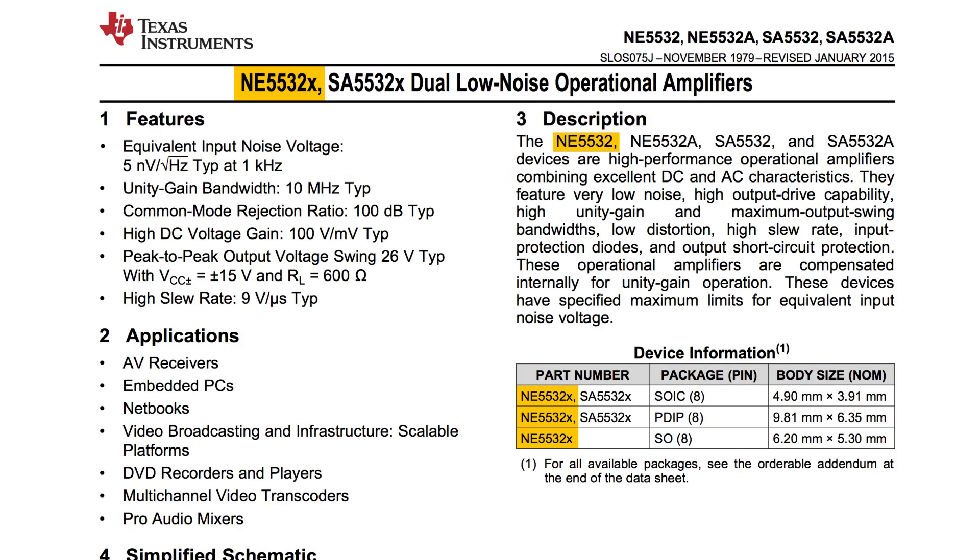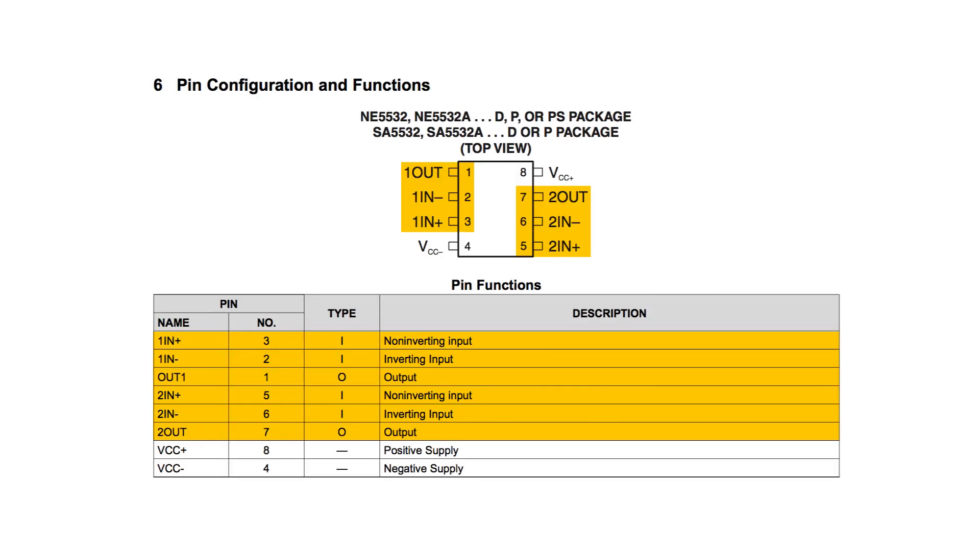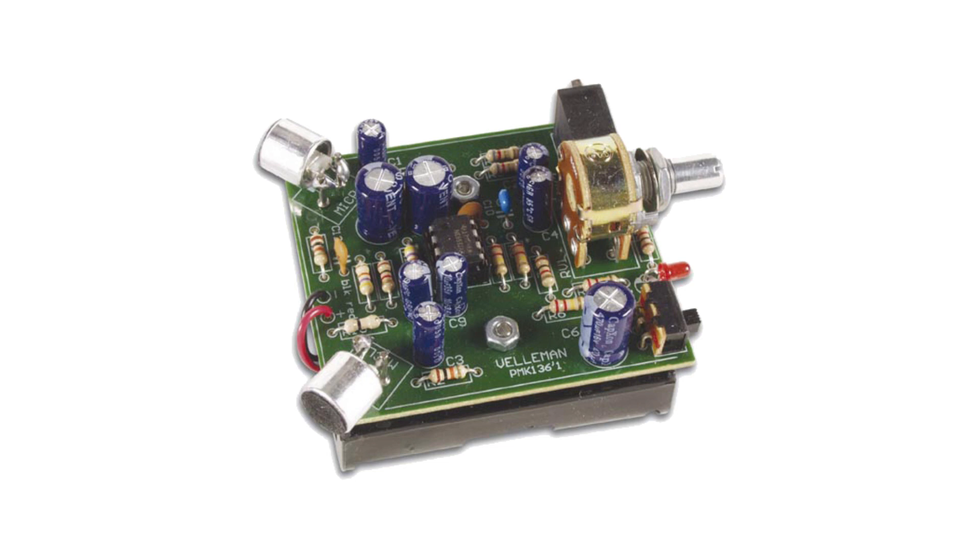This kit uses an NE5532 op amp. The IC contains two op amps. On the pinout you can see pins four and eight are the supply voltage pins, the inverting and non-inverting inputs and the outputs of each op amp. Each op amp amplifies the signal from one of the two microphones and outputs the signal to a phone jack.